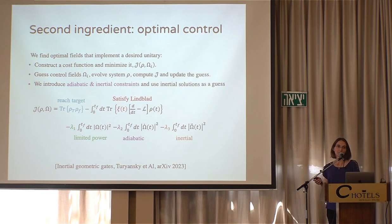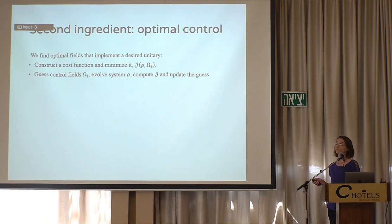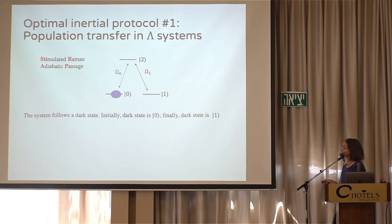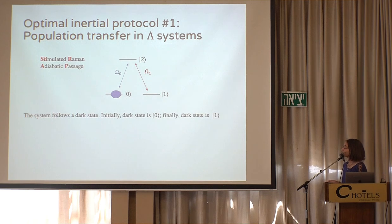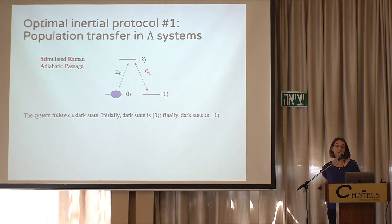The first protocol I want to show is improving STIRAP. STIRAP is an adiabatic protocol for transferring population between two ground states of an atomic system — between two low-energy states. Say we have an atom with energy levels zero, one, and two, and we want to transition population from state zero to state one via an excited state without ever populating state two. STIRAP is an adiabatic protocol based on adiabatic following of the dark state.